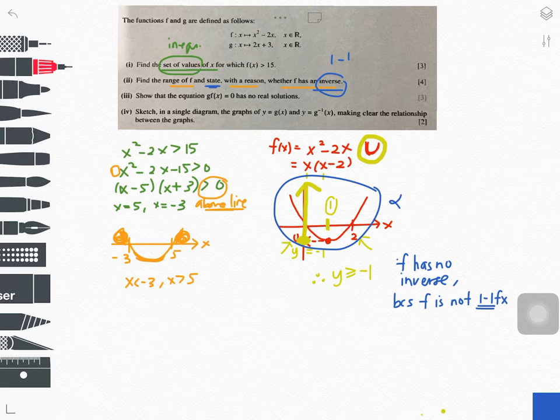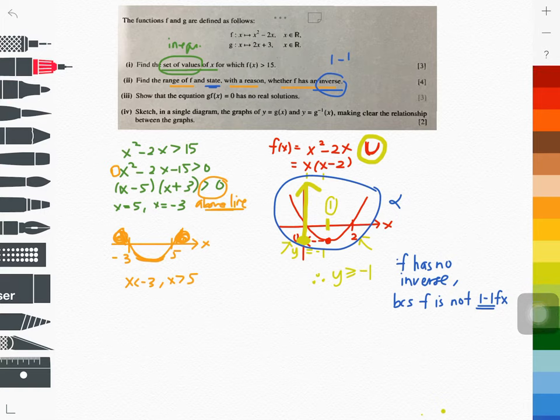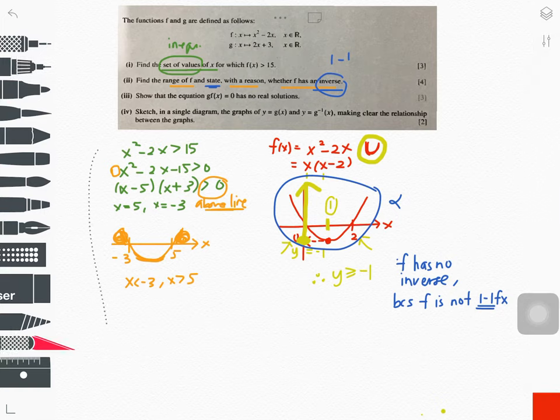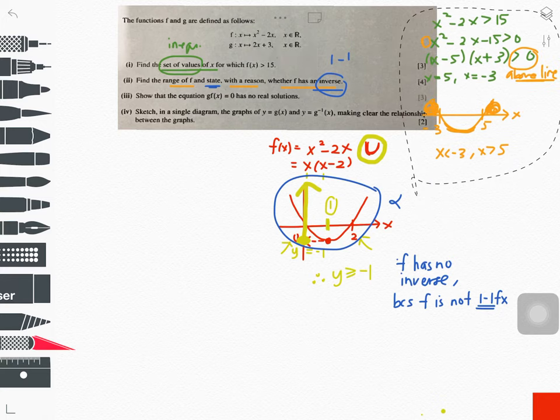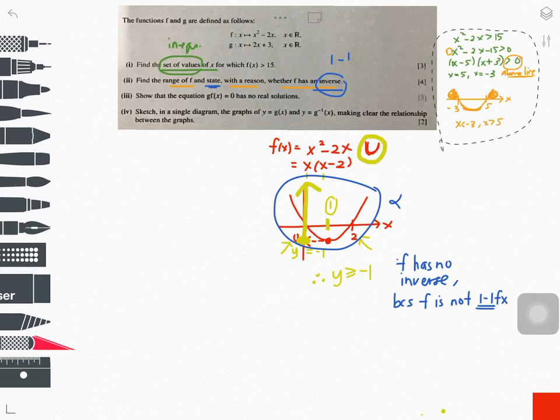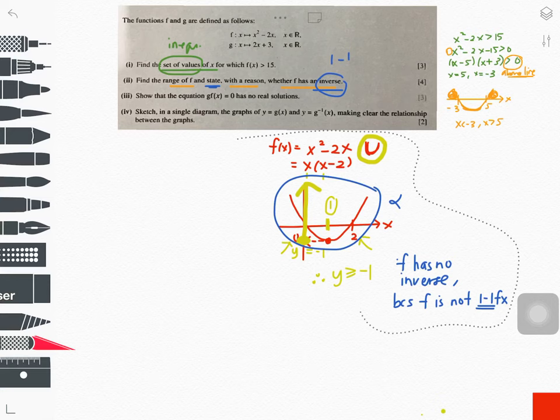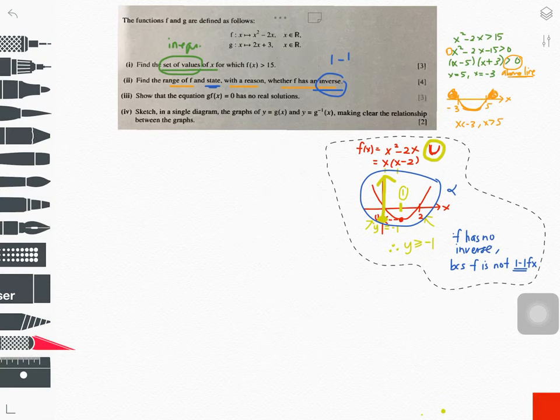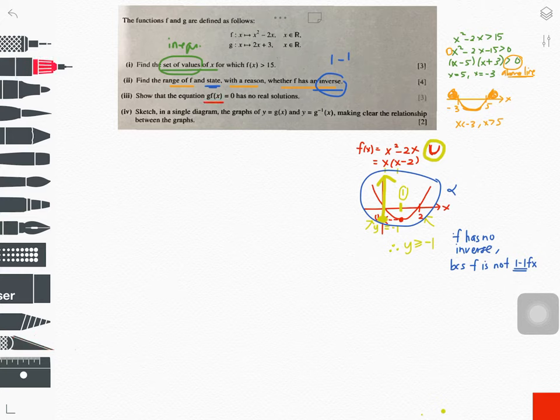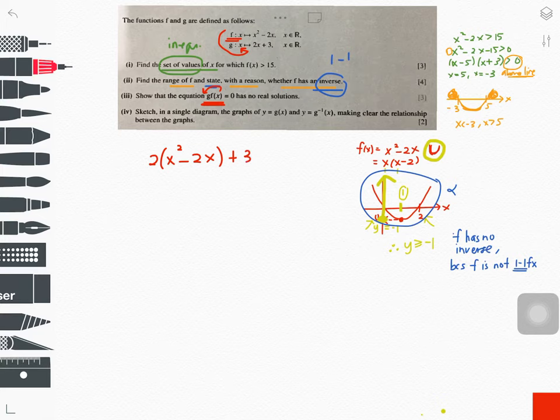Let's go for part three now. How do I do part three? For this composite function, take the f, put into the g. Take the f, put into the g. What you get? 2x squared minus 4x plus 3 equals 0. I got my composite, I'm equating to zero.